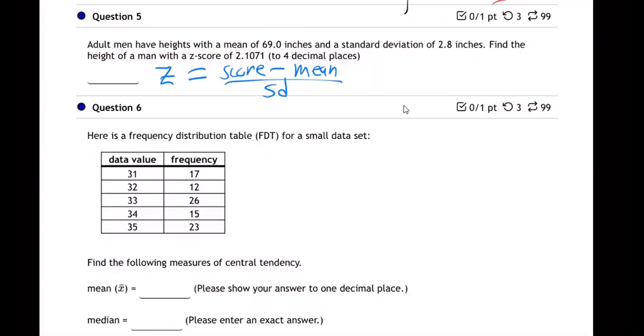So now I'm going to say, okay, the z-score they're telling me is 2.1071, that goes right here, 2.1071.